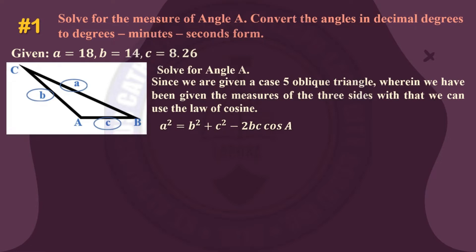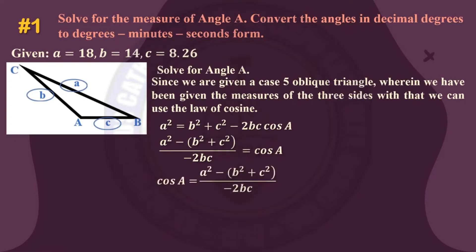We will utilize a² = b² + c² − 2bc·cos A. Let's derive our formula first. We transpose b² + c² to the other side of the equation and divide both sides by −2bc, so we have cos A on the right side. Since we need to find angle A, we transfer cosine to the other side, giving us: angle A = arccos((a² − b² − c²) / (−2bc)).